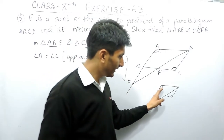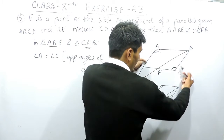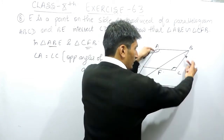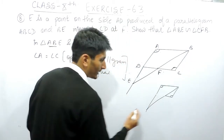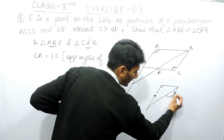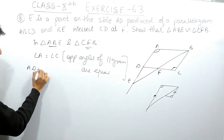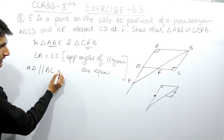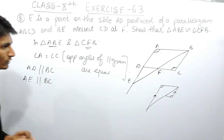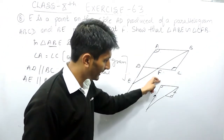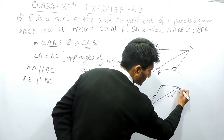This angle and this angle are equal. Also, in a parallelogram the opposite sides are parallel, and since this line AD has been extended, these two lines must be parallel. So I can say that AE must be parallel to BC.